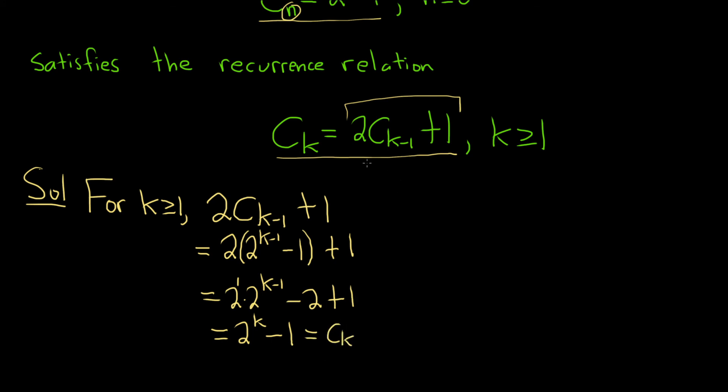So we've shown that they are both equal. So we've shown that 2 times c sub k minus 1 plus 1 is equal to c sub k. So we've shown our sequence satisfies this recurrence relation.